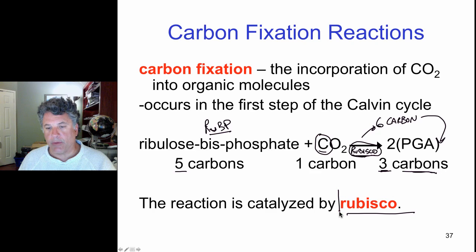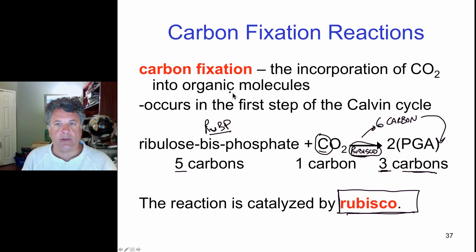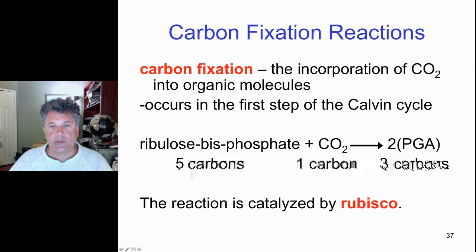And we will see that rubisco, this enzyme, which is a large enzyme consisting of many subunits, has certain properties that make this process of carbon fixation not entirely efficient. And that's kind of an artifact of evolution that we will consider shortly, but not right now. Let's move on to the Calvin cycle itself and look at the entire cycle. And that's what we'll pick up with in the next part of this lecture. We'll look at the Calvin cycle and look at its organization into three major phases.